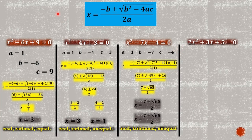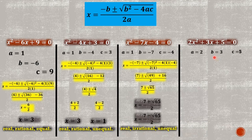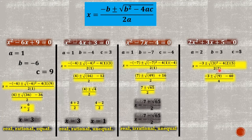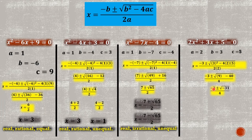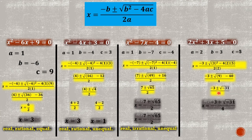Next, problem four: 2x squared plus 3x plus 5 equals zero. We identify A equals two, B equals three, and C equals five, then substitute into the quadratic formula: negative three plus or minus square root of three squared minus four times two times five, all over two times two. Performing the operations: nine minus forty equals negative thirty-one, giving us negative three plus or minus square root of negative thirty-one over four. Based on the discriminant, this problem is non-real and imaginary.